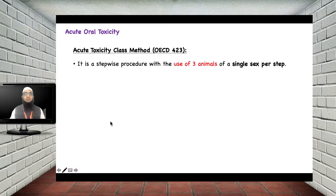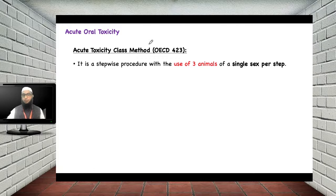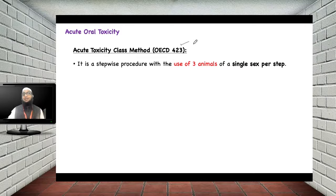We will now look in detail at an important acute oral toxicity study: the acute toxicity class method. This is one of the important acute toxicity tests, conducted as per OECD guideline 423, which uses a stepwise procedure with three animals of a single sex per step.